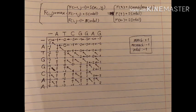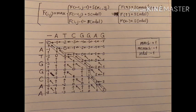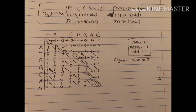After filling up the whole table, we draw a path from the bottom right corner to the top left corner following the arrows. It's also possible to end up with more than one path if along the way we hit cells that have more than one arrow. Our alignment score is the number in the bottom right corner, which here is two.